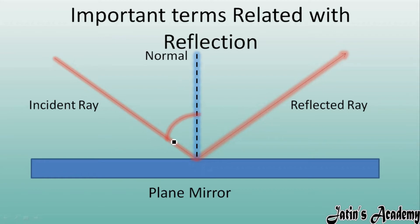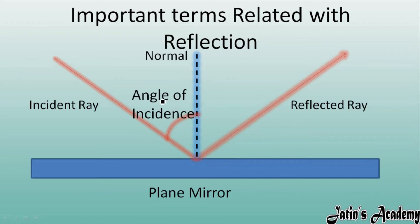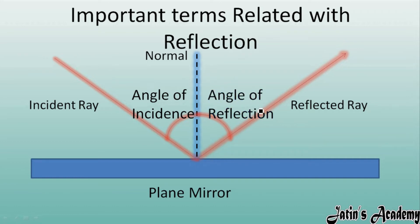The angle made between the incident ray and the normal is known as the angle of incidence. Similarly, the angle between the reflected ray and the normal is known as the angle of reflection.